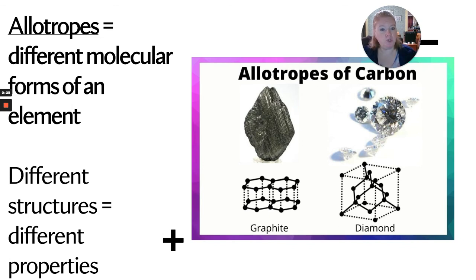One of the most common examples used for allotropes is carbon. Carbon has two widely known forms: graphite and diamond. Those are not the only two allotropes of carbon, but the two most common. Widely different properties. Graphite is used in pencils; diamond is the hardest substance.